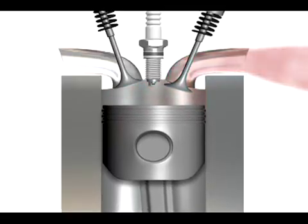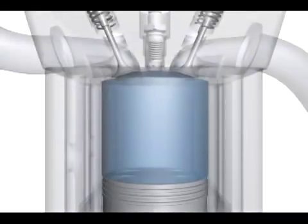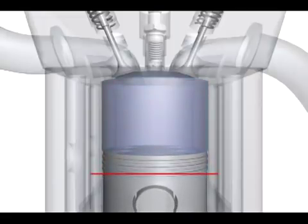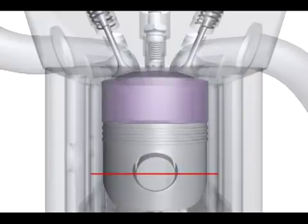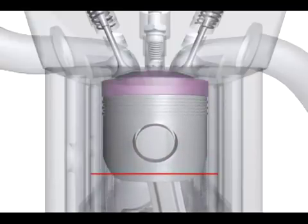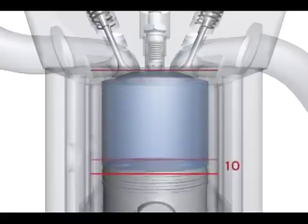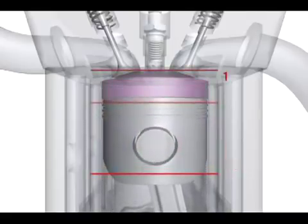Two terms you may be asked to explain to customers are the engine's compression ratio and displacement. Compression ratio is the ratio between the total volume of a combustion chamber and cylinder when the piston is at the bottom of its stroke and when the piston is at the top of its stroke. In this example, the compression ratio is 10 to 1.